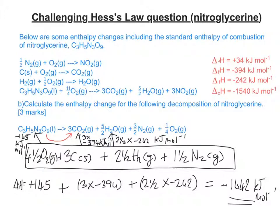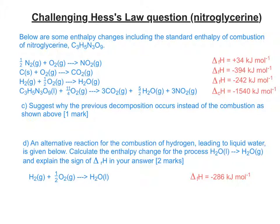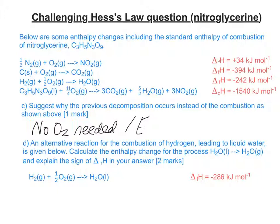Now the next part gets you to think about why two possible reactions might occur. The previous decomposition involved changing C₃H₅N₃O₉ into its constituents — not its constituent elements, it didn't completely decompose — but it was similar to the combustion in the data in one significant way: it produced carbon dioxide and water in the same quantities, but it did not produce NO₂. The two possible best things to say would be either there's no oxygen needed, or possibly the activation energy is lower.